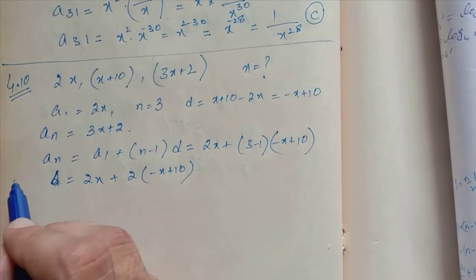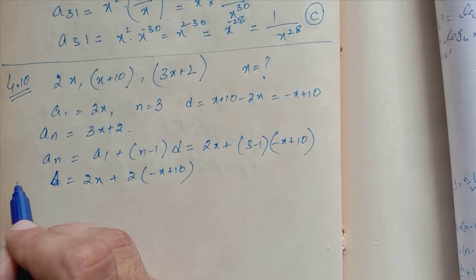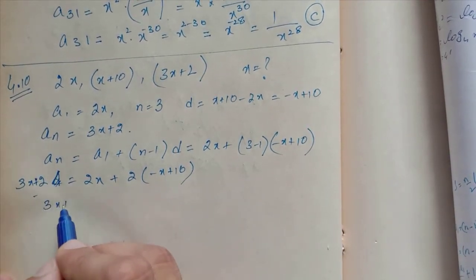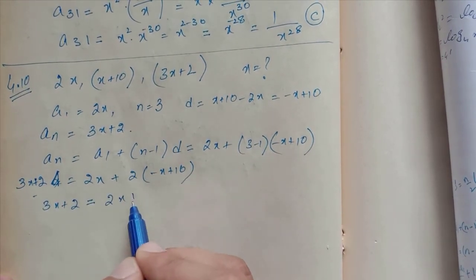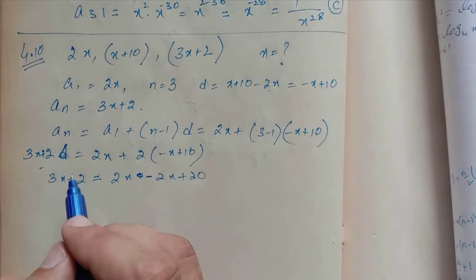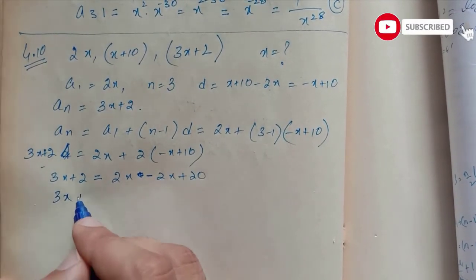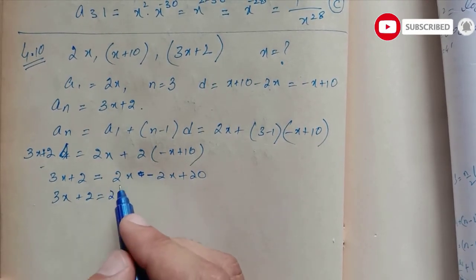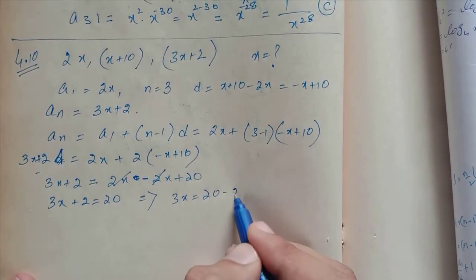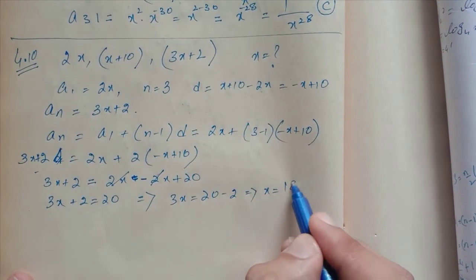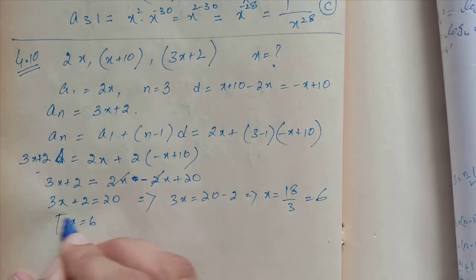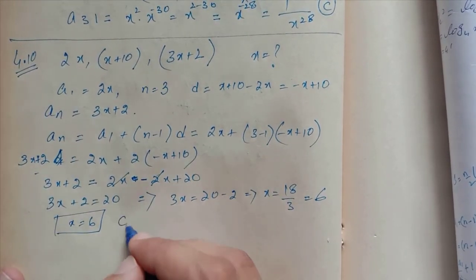3x+2 = 2x + 2(-x+10). This equals 2x - 2x + 20. So 3x+2 = 20. This implies 3x = 18, so x = 6. Question 4.10, the answer is x = 6.